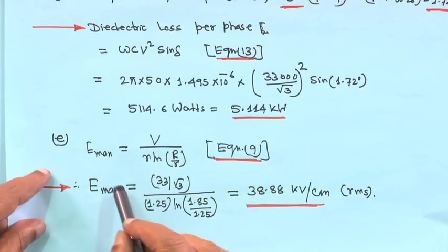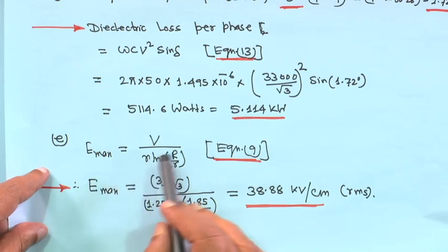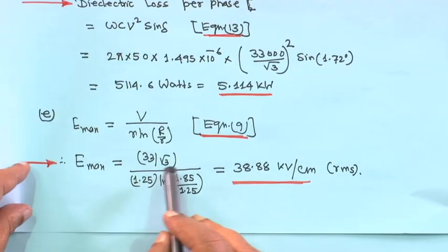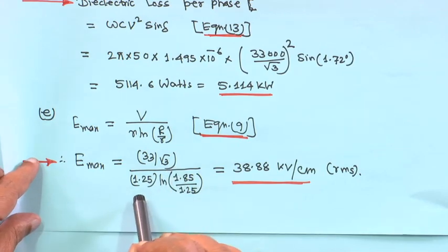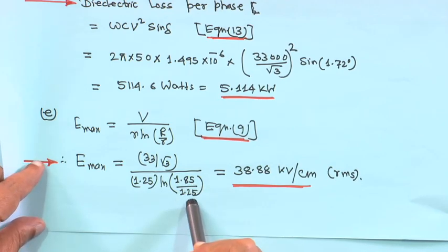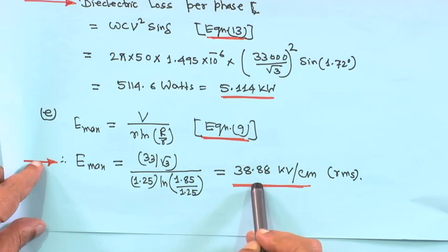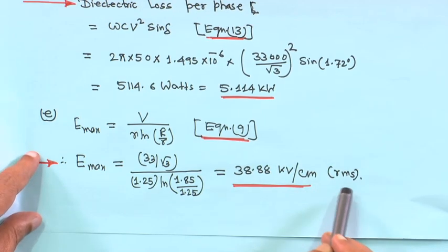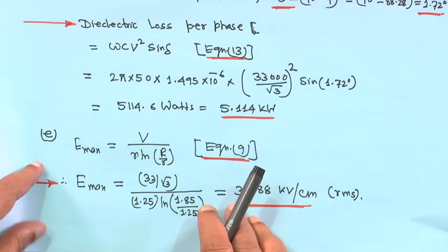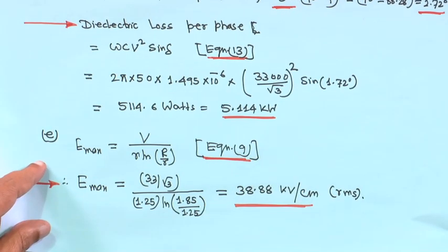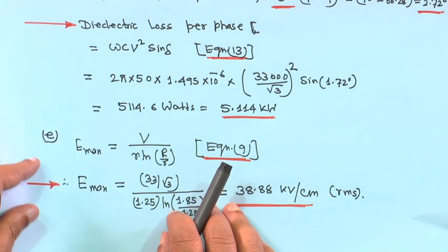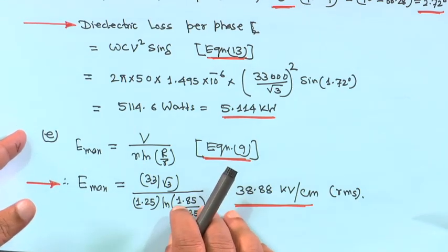Finally, maximum stress: E_max = V/(r·ln(R/r)) = (33,000/√3) / (1.25 × ln(1.85/1.25)) = 38.88 kV/cm (RMS value). These are the numericals for this topic. If any calculation error is found, please let me know so I can correct it. Thank you, we will be back again.